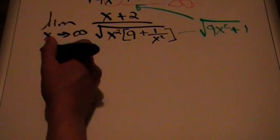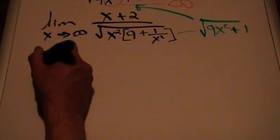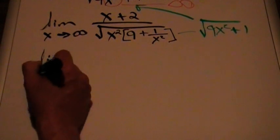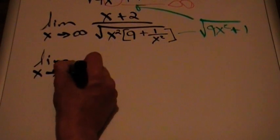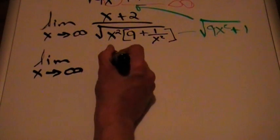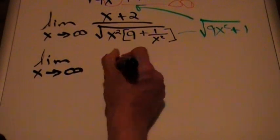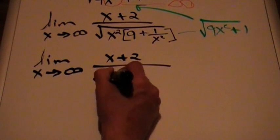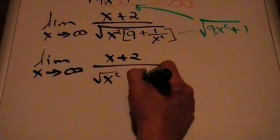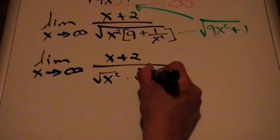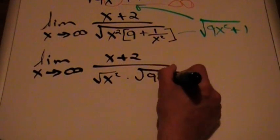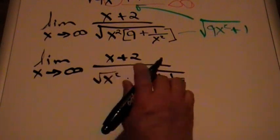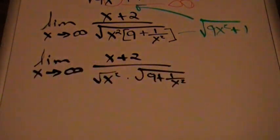Let me rewrite what I have. The limit as x approaches infinity of (x + 2) over the square root of x² times (9 + 1/x²). So we have the root of x² times (9 + 1/x²) in the denominator.